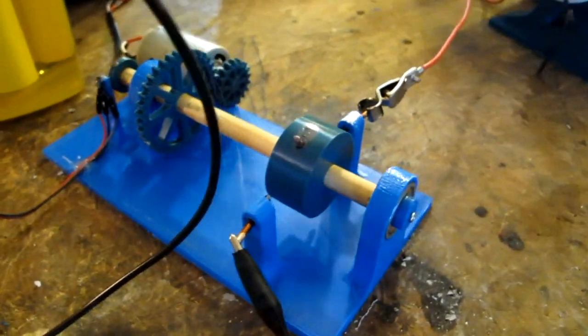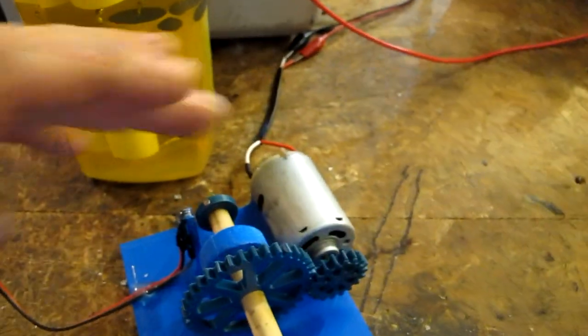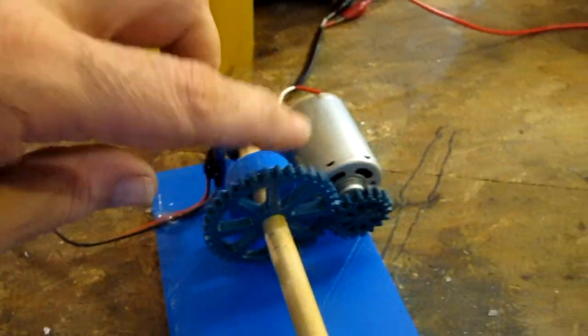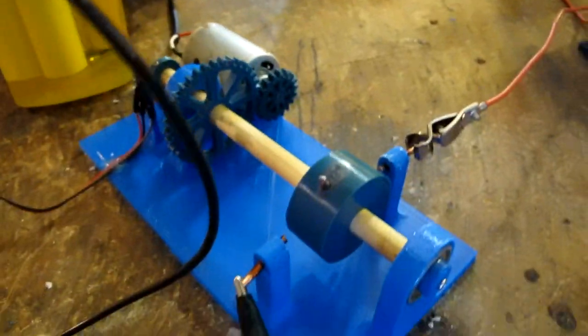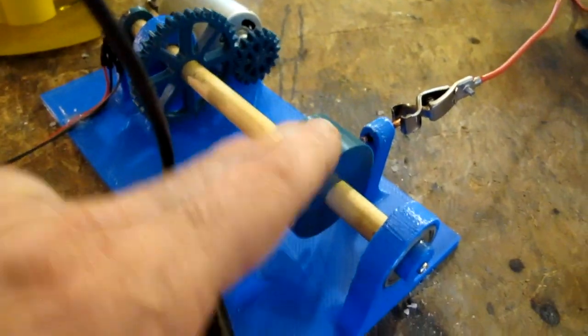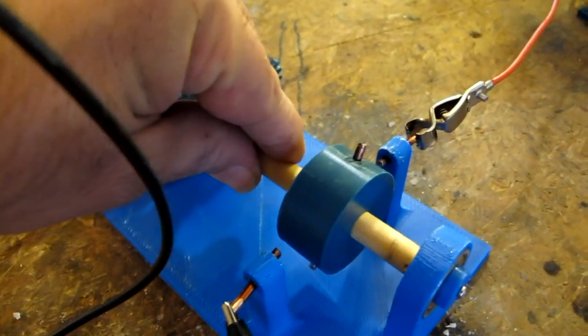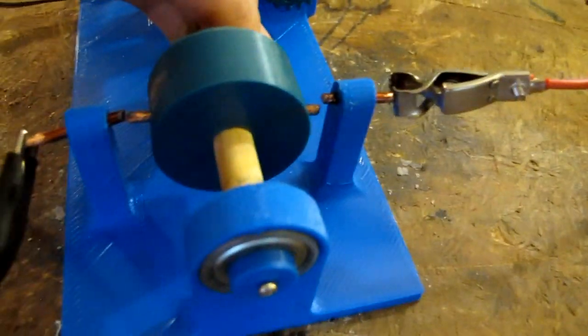Alright, so rotating spark gap. Basically got a little DC motor, bit of gearing, and this goes all the way through here and bridges the two contacts there.